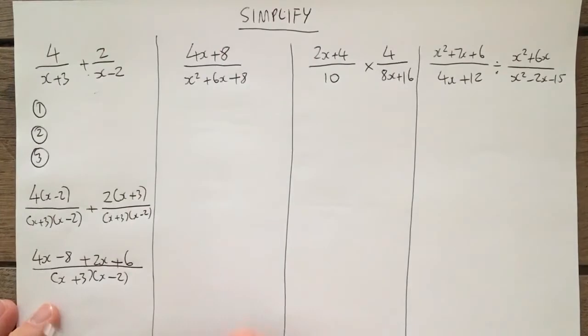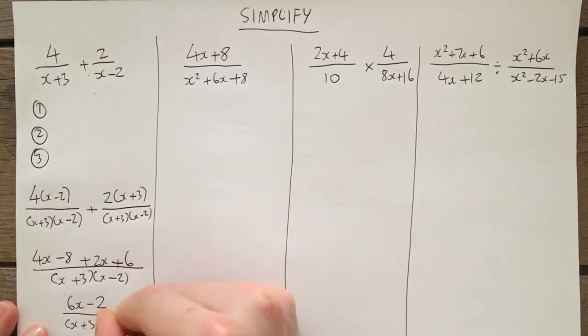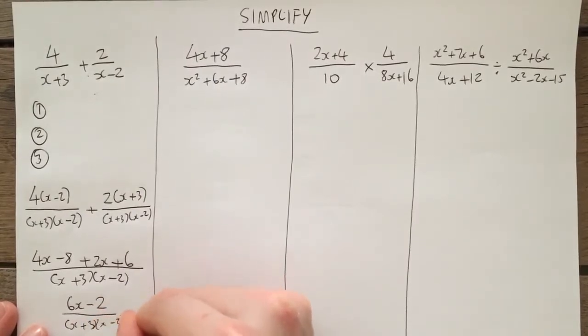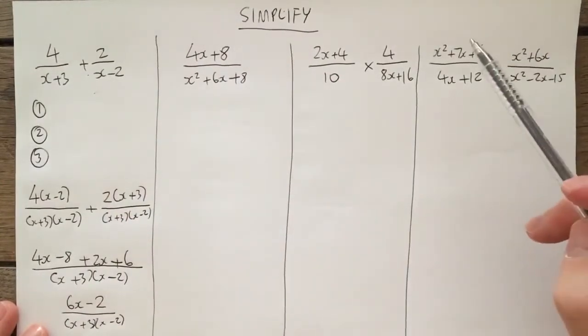Right, to finish it off, we've got to simplify it. Simplify it means 4x plus 2x, which is 6x, negative 8 plus 6, which is negative 2, over x plus 3x minus 2. Final answer. OK, that's adding or subtracting algebraic fractions.